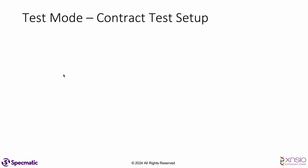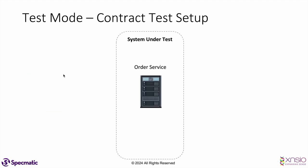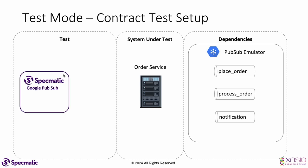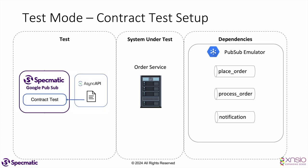To run the contract tests against this service, we use the Google Pub/Sub emulator instead of the actual Pub/Sub instance. This helps in running the tests fast without having to depend on the actual Pub/Sub instance. Specmatic can then leverage the order service's async API specification to run the contract tests. In the contract tests, Specmatic will act like a client of the order service and send a message on the place order topic.